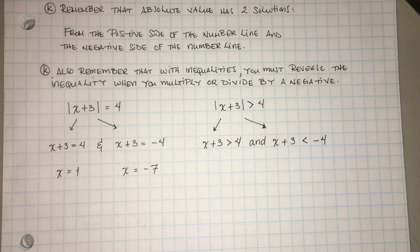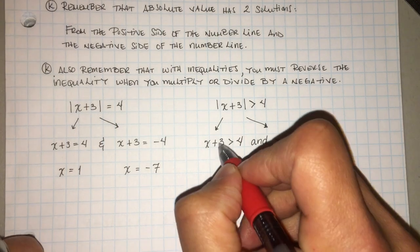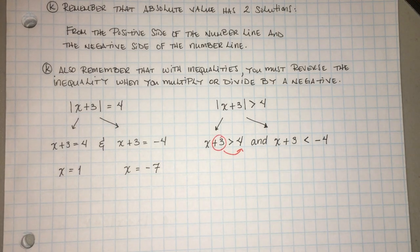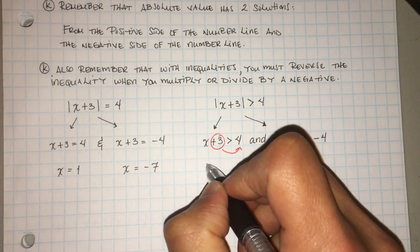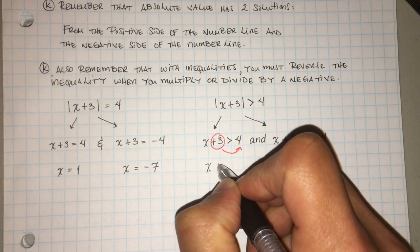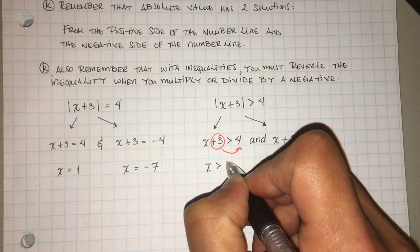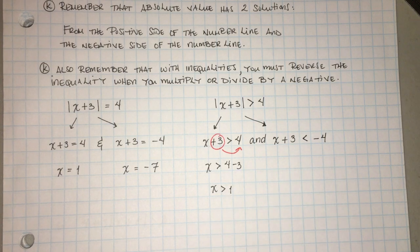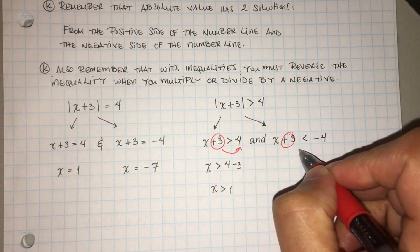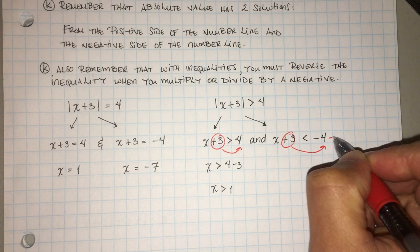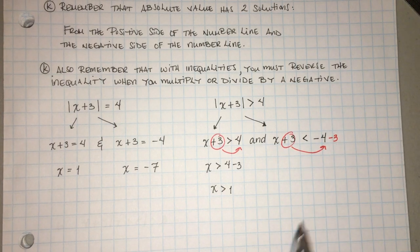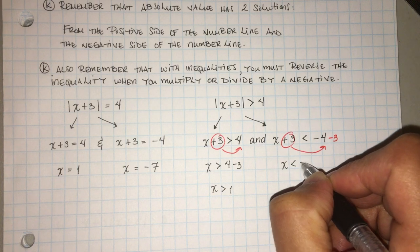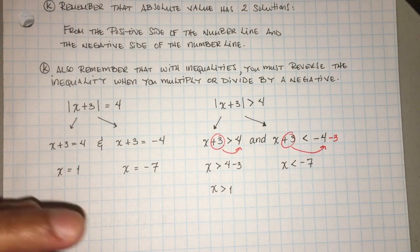Letters on the left, numbers on the right. Este positivo 3 acá se convierte en negativo 3. So positive 3 becomes a negative 3. So you have 4 minus 3 and x is greater than 1. Same thing over here — bring it over, becomes a negative 3. Now be careful with these negatives, tengan cuidado. We're going to have x is less than — negative 4 minus 3 is negative 7.